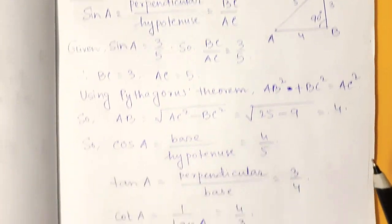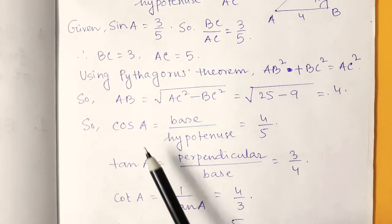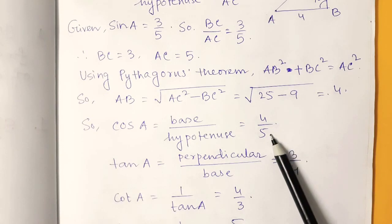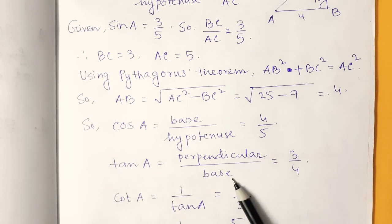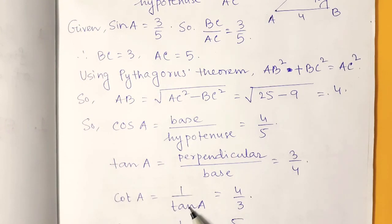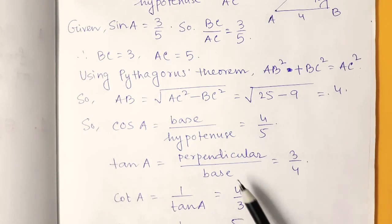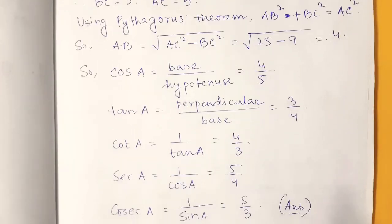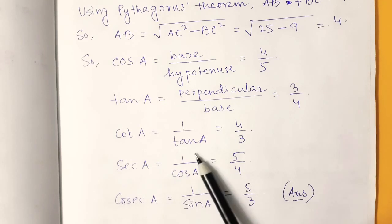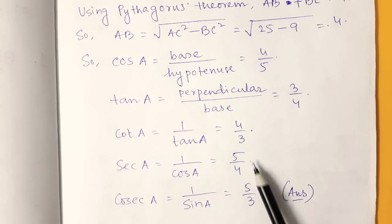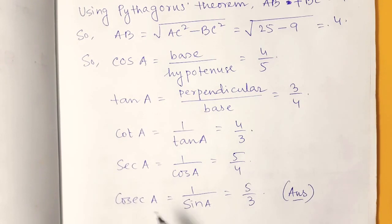Now we have all the values. What is cos A? Cos A is base by hypotenuse, so it will be 4 by 5. Tan is perpendicular by base, so it is 3 by 4. Cot is 1 by tan A, so it is 4 by 3. Similarly, sec A is 1 by cos A, which is 5 by 4, and cosec A is 1 by sin A, so it is 5 by 3.